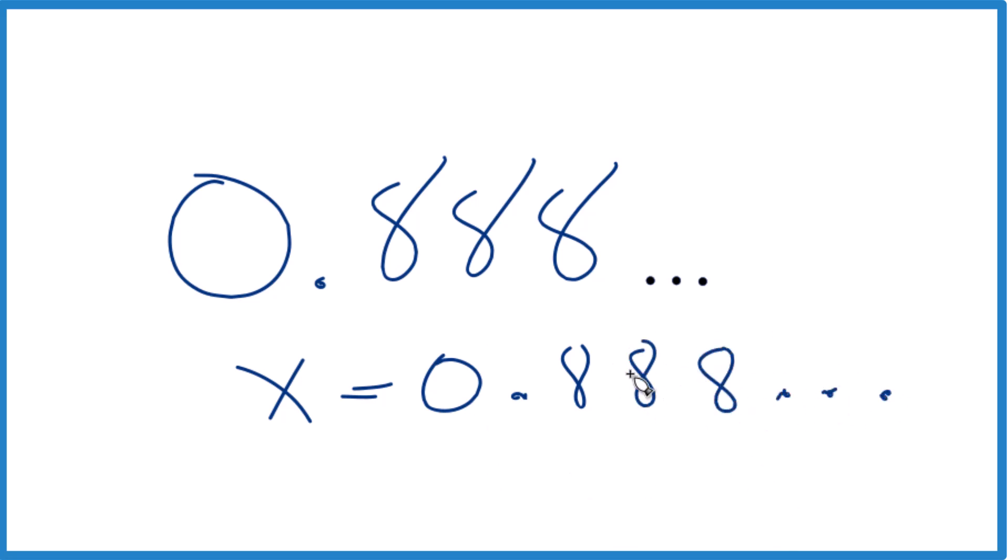If we could get this to have a whole number in it, so we could have 8.888 repeating, that would be kind of nice. So let's multiply this by 10, but remember this is algebra, so we have to multiply this side by 10 as well.